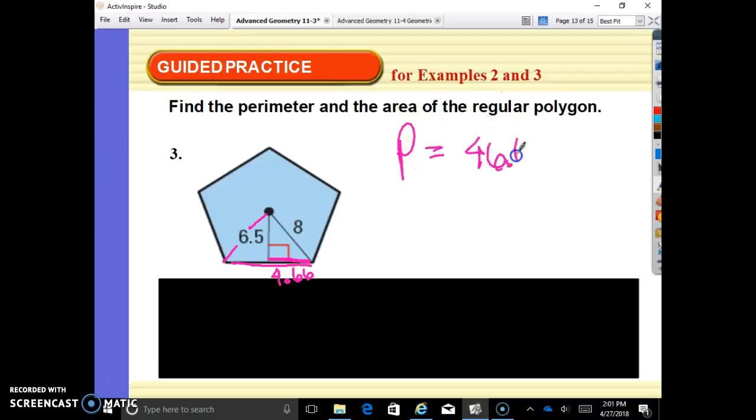Leaving that in your calculator, the area is going to be one half ap, your apothem times your perimeter of 46.64. Your apothem is 6.5, so that 46.64 times 6.5 divided by 2, and you get that the area is approximately 151.57.